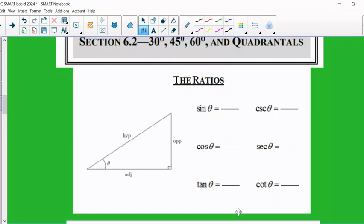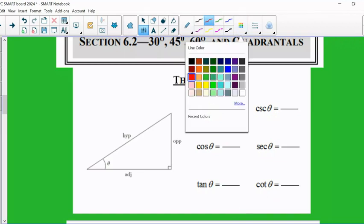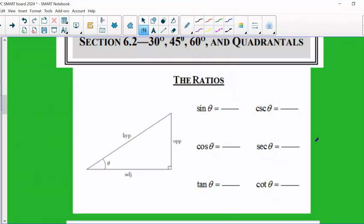So there are six trig ratios, and the ones that are probably most common are sine, cosine, and tangent. But then there's also the reciprocal functions of cosecant, secant, and cotangent.